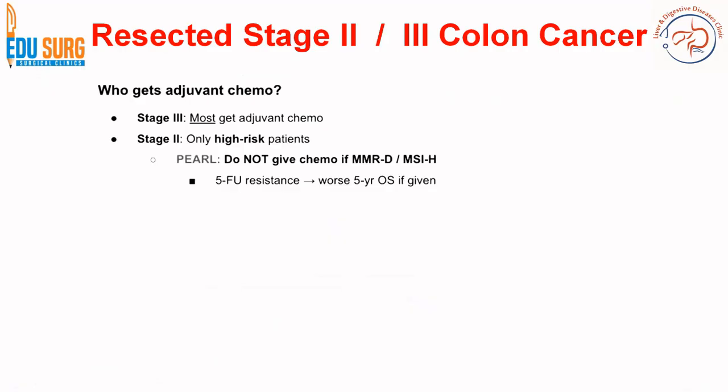For adjuvant chemotherapy in stage 3, nearly all patients will receive adjuvant chemotherapy, whereas in stage 2 only high-risk patients get adjuvant therapy. We never give chemotherapy in stage 2 when patients are mismatch repair deficient or microsatellite instability high.